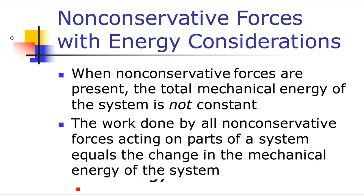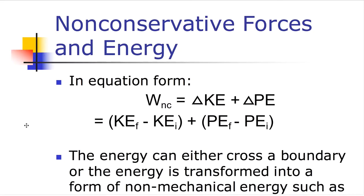When non-conservative forces are present, the total mechanical energy is not constant. Work is done by non-conservative forces — for instance, friction. The work done by non-conservative forces equals the change in kinetic energy plus the change in total potential energy: final KE minus initial KE, plus final PE minus initial PE. Whatever that difference adds up to is how much work had to have been done by friction — it's what took the energy out of the system.